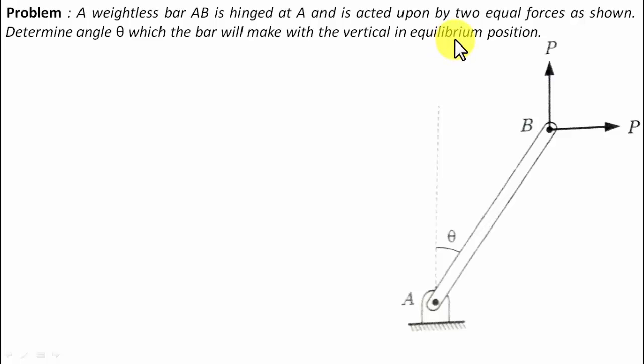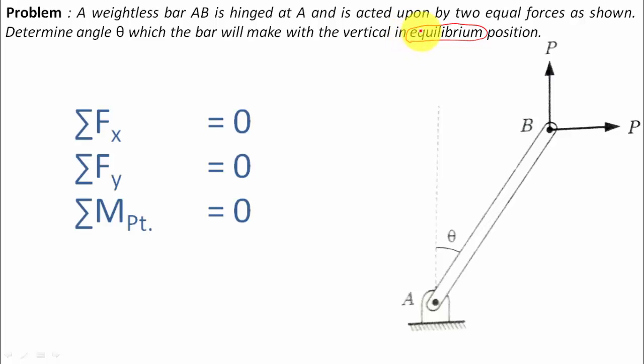Determine angle theta which the bar will make with the vertical in equilibrium position. Whenever you speak of equilibrium, you have three equations of equilibrium: one is the summation of all forces in the x-direction equals zero, second is summation of all forces in the y-direction equals zero, and the third — also extremely important — is summation of the moments of all the forces about a specific point equals zero.